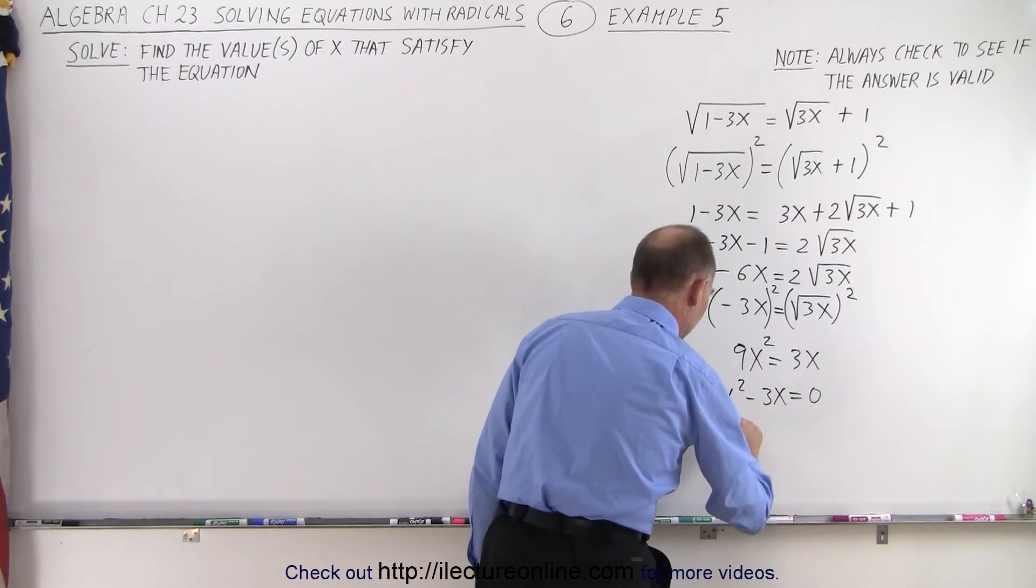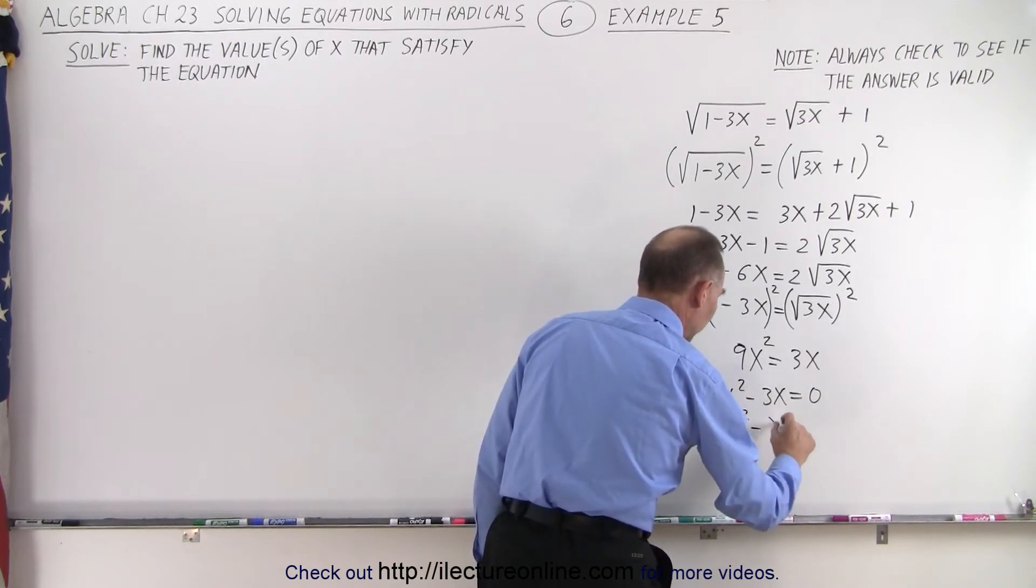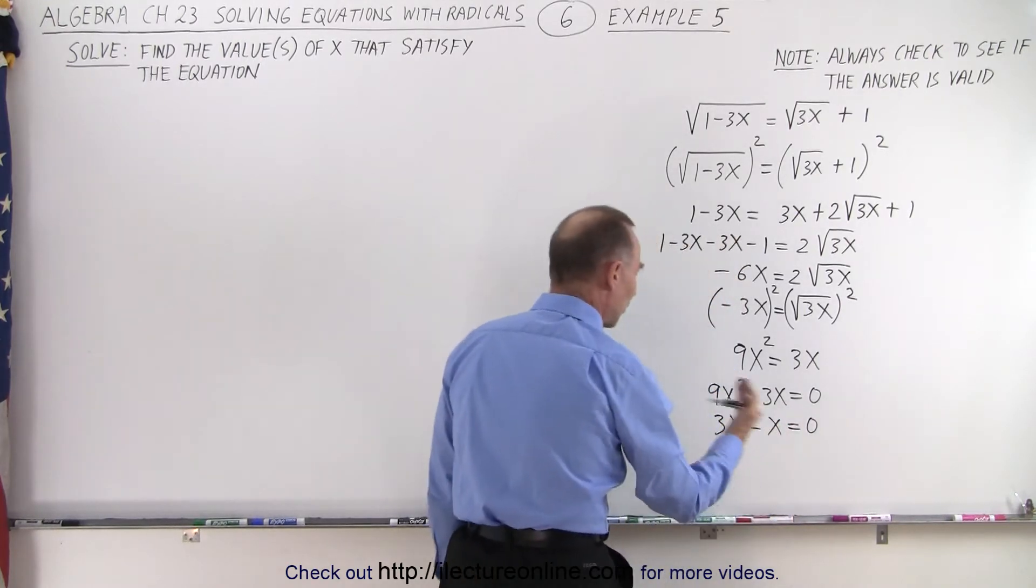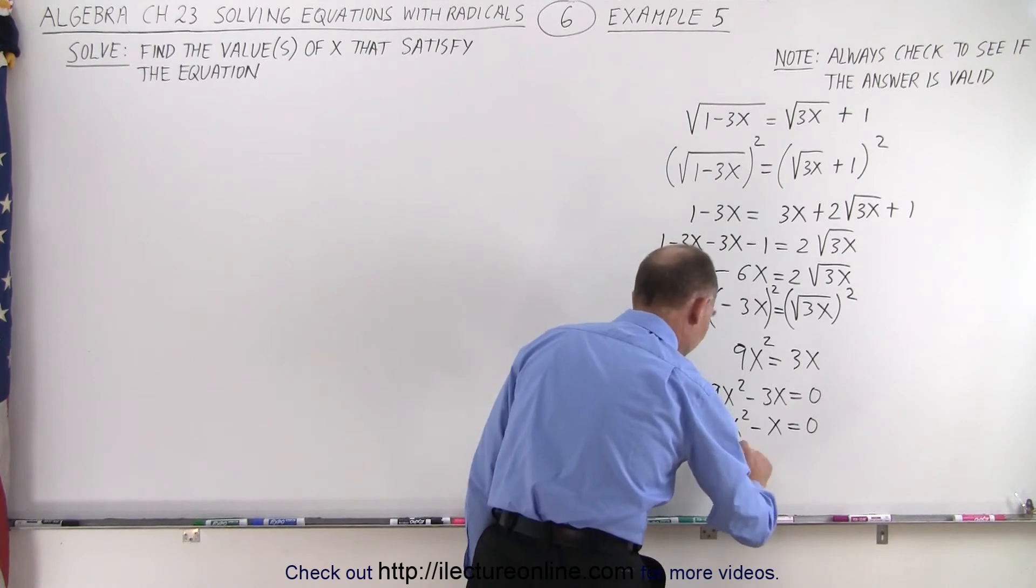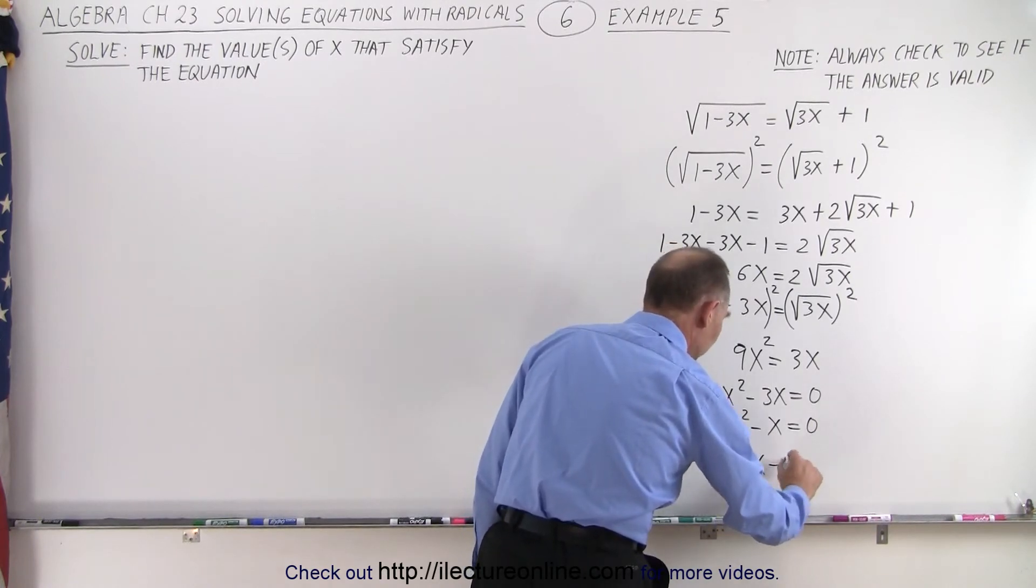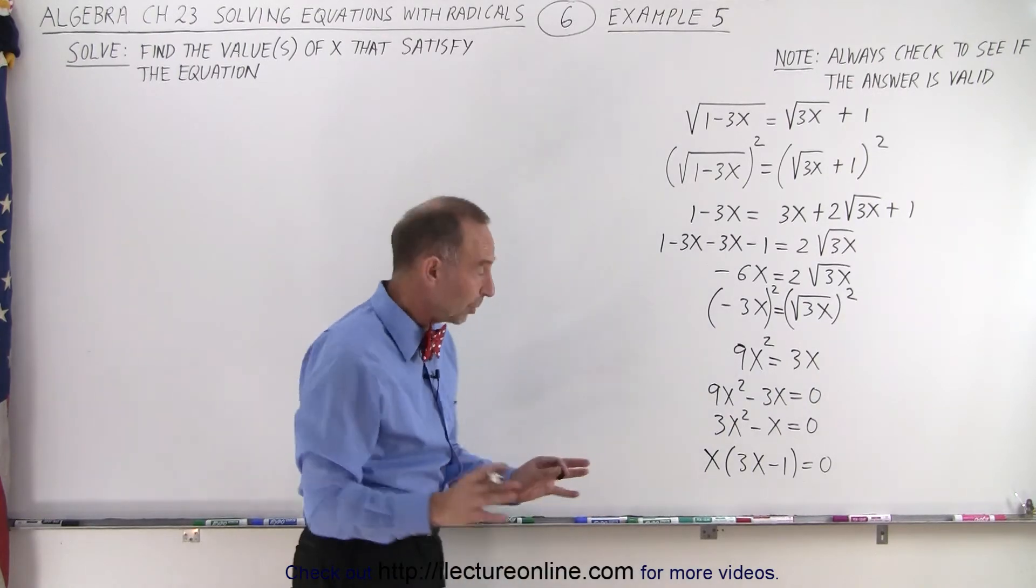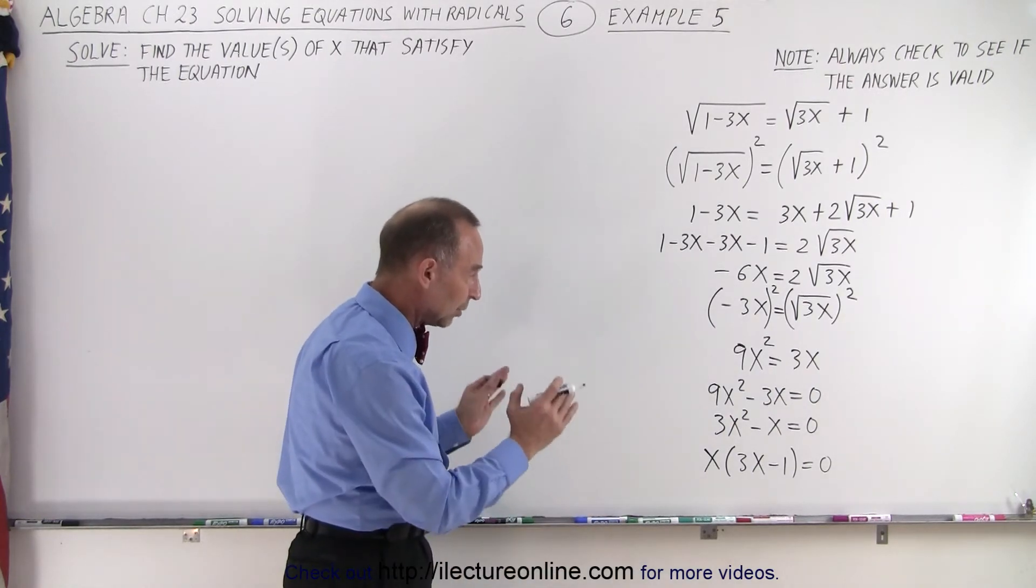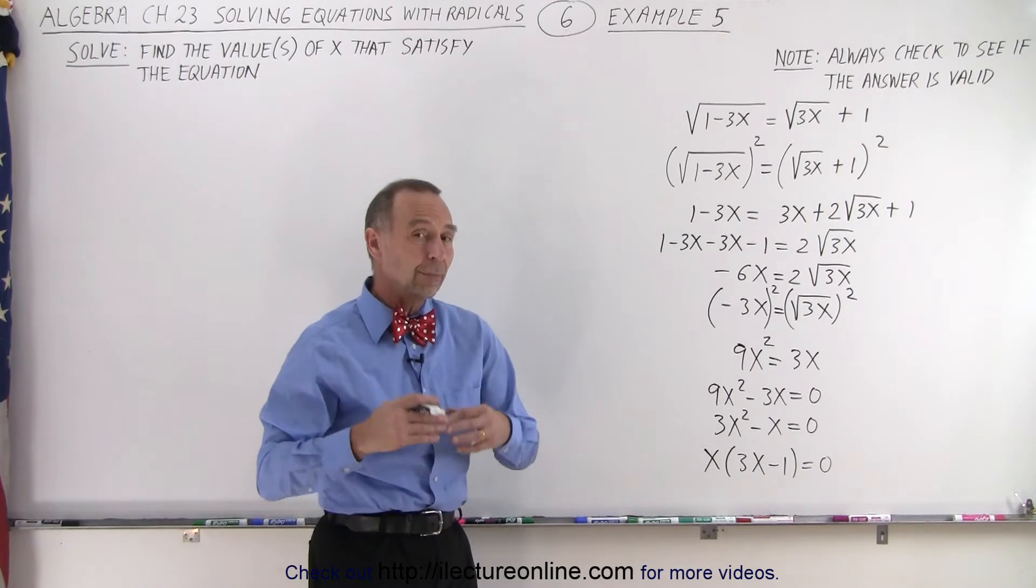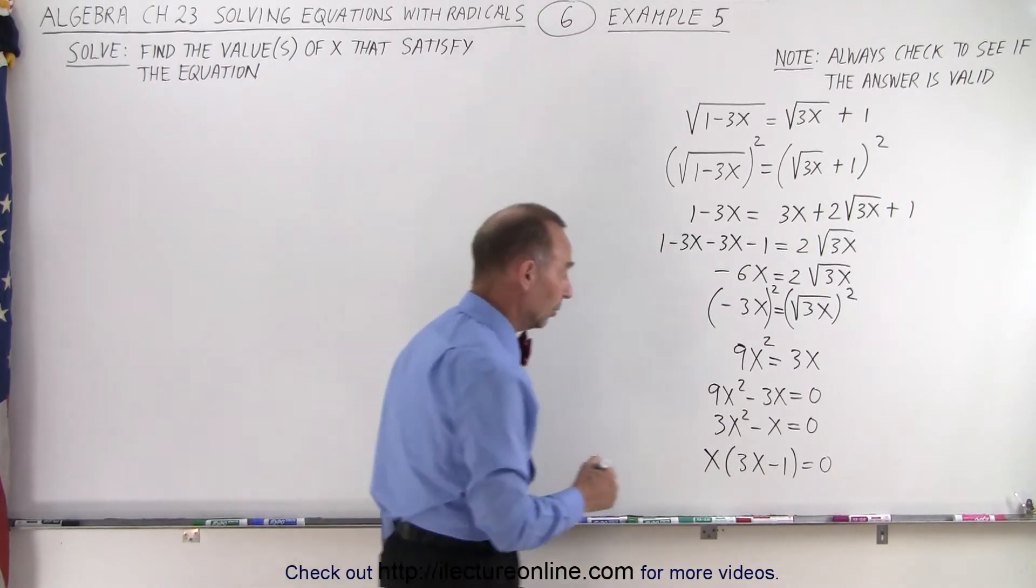Divide both sides by 3, we get 3x squared minus x equal to 0. Then when we factor out an x, we get x times 3x minus 1 equals 0. Now we have two things that are multiplied together, x and the quantity 3x minus 1. So if the product equals 0, that means either 1 must equal 0.